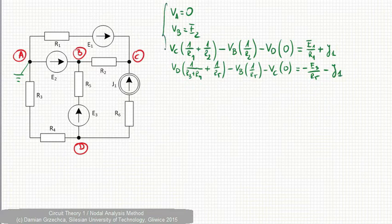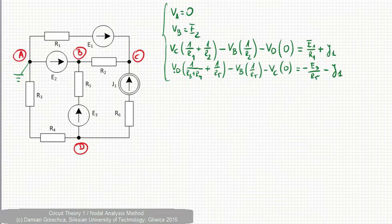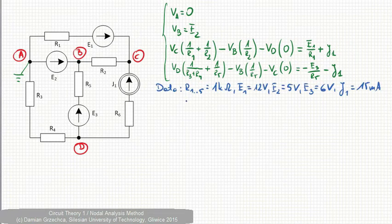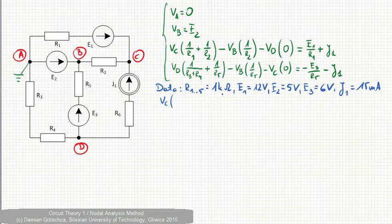This is how we create a system of equations using nodal analysis method for this simple circuit. Now, let's introduce data based on the system of equations we have calculated previously. We can write the potential of the C node times R1 up to R5 are the same, 1 kilohm.